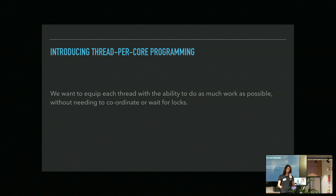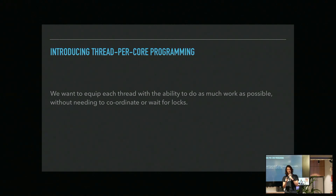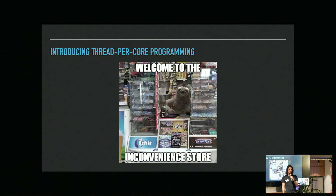Introducing the concept of thread-per-core programming — pretty straightforward. You have a thread per core. The underlying theme is that we want to divvy up our application so that we separate out the incoming work into as many independent shards as we possibly can. We don't really want them to communicate too much, because that would mean waiting in queues or waiting for locks and mutexes — welcome to the Inconvenience Queue.